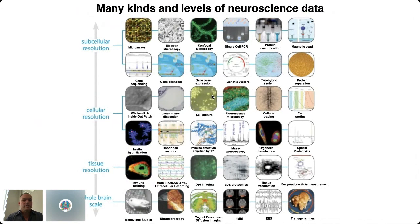Another grand challenge is the fact that we've got such diverse types of data, from the subcellular level to the cellular level, to the tissue level, to whole brain and behavior. They're produced from many different experimental methods, many different modalities, many different instruments. There's a grand challenge of how you organize that, how you make it possible to integrate all of that, to build a more integrated understanding of how these levels of the brain relate to each other.